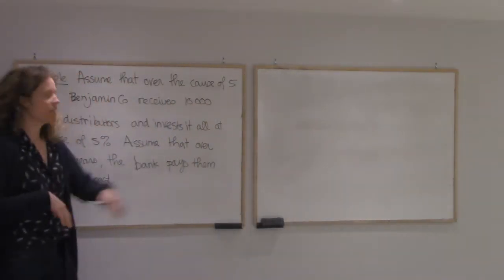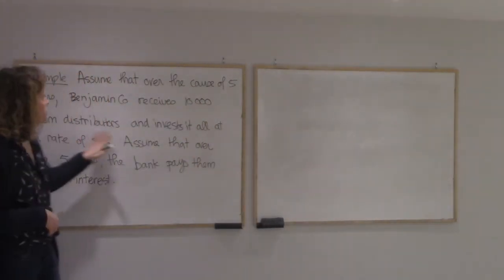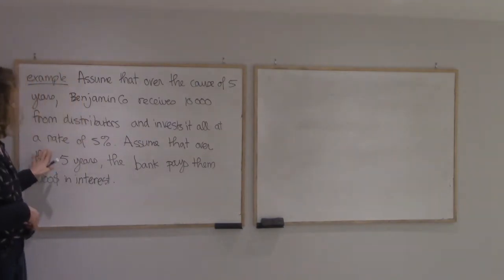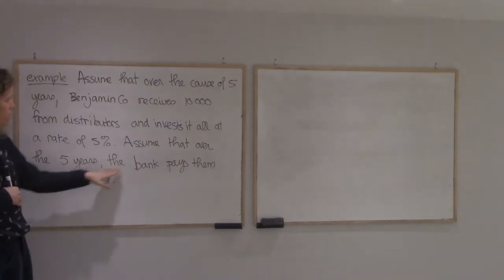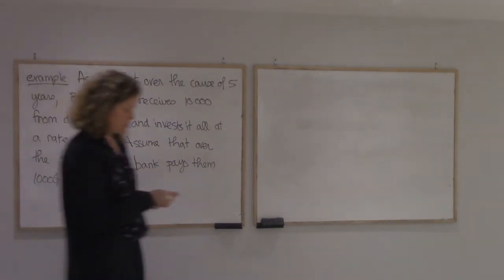So in total they're getting $10,000 from distributors and invest it all at a rate of 5%. We're assuming that means compounded continuously. Assume that over the five years the bank pays them $1,000 of interest.